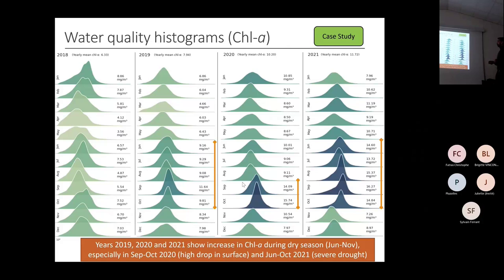Looking within each year — 2019, 2020, 2021 — we can clearly see an increase in chlorophyll during the dry period starting in June. It's very easy to see, especially from June to November and in September/October 2020.